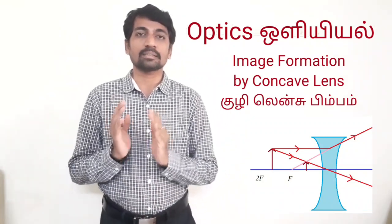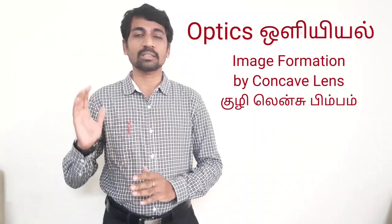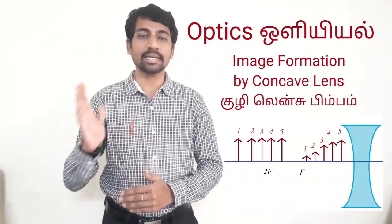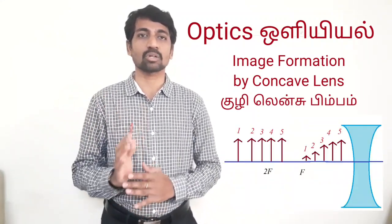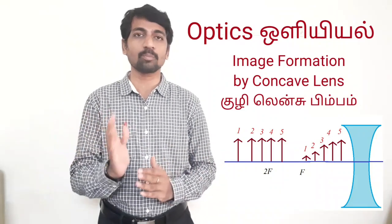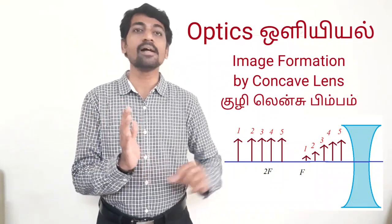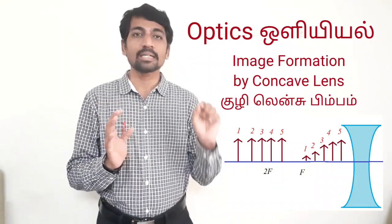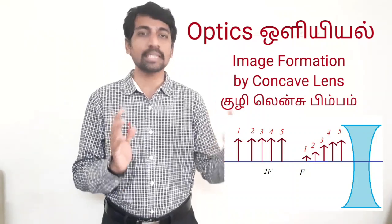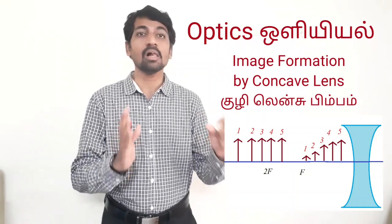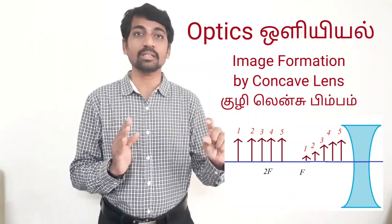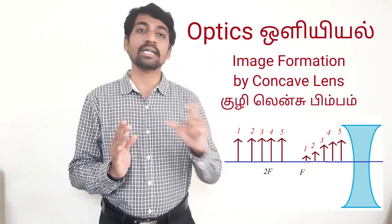If we move the object towards the lens, decreasing the distance, the image distance from the lens also decreases. But the size of the image increases.